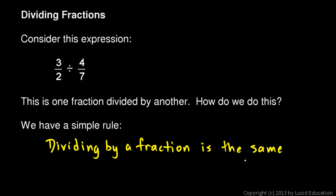So dividing by a fraction is the same as multiplying by the reciprocal of that fraction. So instead of dividing by 4 sevenths, that will be the same thing as multiplying by 7 fourths. So any time we divide by a fraction, we can use this concept to change the division problem into a multiplication problem. And multiplying fractions is something we already know how to do.